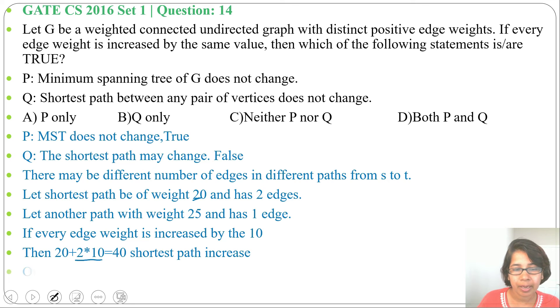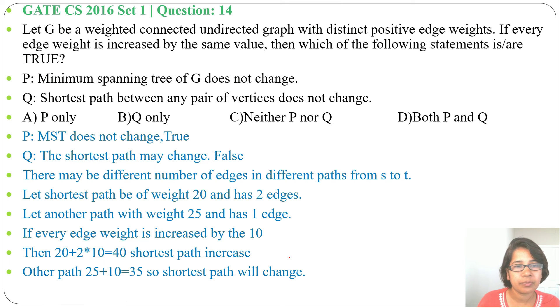While the other path is 25 plus 10 equals 35, so the shortest path will change. So here, statement P is true and statement Q is false. The answer will be option A: P only. Minimum spanning tree doesn't change, but shortest path may change.